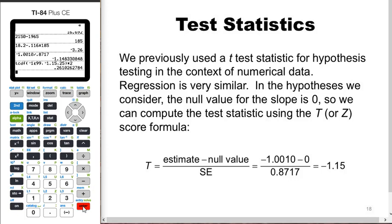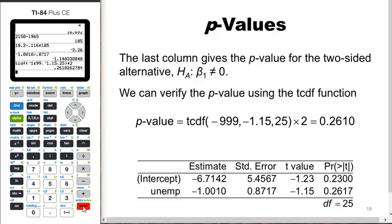To summarize: the test statistic is found by taking the estimate minus the null value divided by the standard error — negative 1.0010 minus zero divided by 0.8717 equals negative 1.15. The p-value comes from tcdf of negative 999 to negative 1.15 with 25 degrees of freedom times two, and within rounding we get the same answer as the software.